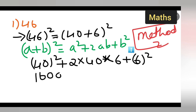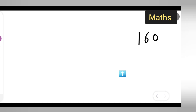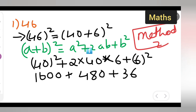40 squared is 1600. Then 2 times 40 times 6: two fours are eight, eight times six is 48, so 480. Then 6 squared is 36. So we have 1600 plus 480 plus 36. Here a is 40, b is 6: 40 squared gives 1600, 2ab gives 480, and b squared gives 36.